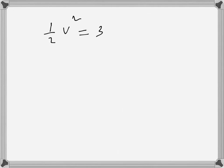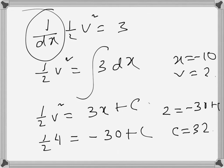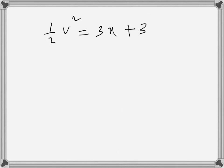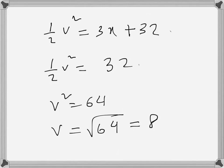Our expression is ½v² = 3x + 32. We need to find the value of v when x = 0. It becomes ½v² = 32, so v² = 64, and v = √64 = 8 m/s. We take only the positive value.